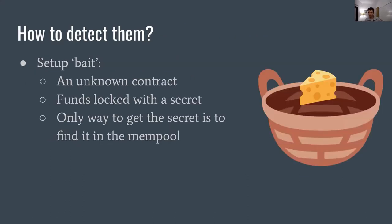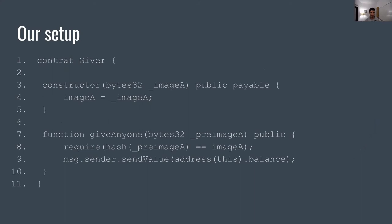In our setup to find, track, and understand these bots, we basically set up some bait. The bait would be in the form of a smart contract that has some funds in it, and these funds will be locked with a secret that is only known to us. This means there is definitely no way for the front-runner to know the secret in advance. And if they do try and front-run us and extract these funds, it means they are looking at transactions in general and not our contract in particular.